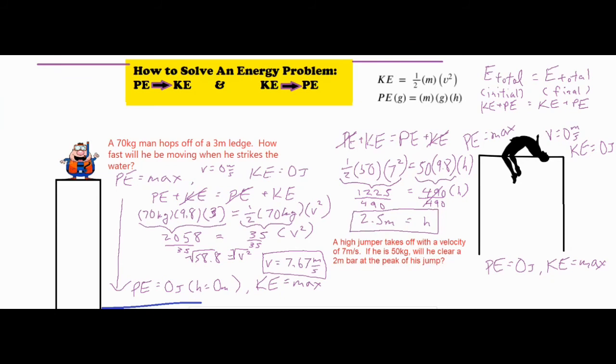We've solved for our H. Our final H-value came out to 2.5 meters, so the answer is yes. The high jumper will clear the 2 meter bar at the peak of their jump because they reach a maximum height of 2.5 meters. So we went ahead and set both of the formulas equal to one another. We had everything for our kinetic energy: 1.5 times the 50 times 7 squared came out to 1,225 joules. We took the 50 times the 9.8, and that came out to 490, which is right beside the H. And then we just went ahead and finished off dividing both sides by 490 to get our final answer of 2.5 meters.